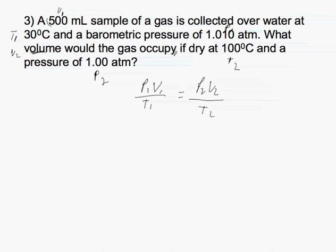Okay, now, because this is said to be dry, we have to take into account the barometric pressure of water. So, our P1 is going to be equal to 1.010 atmospheres minus the barometric pressure or the water vapor at 30 degrees Celsius, which in this instance...